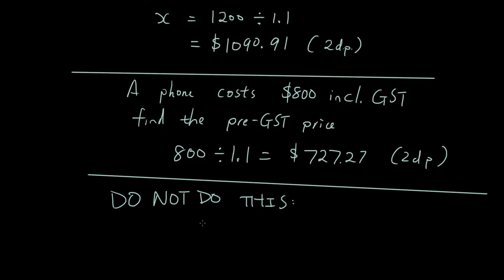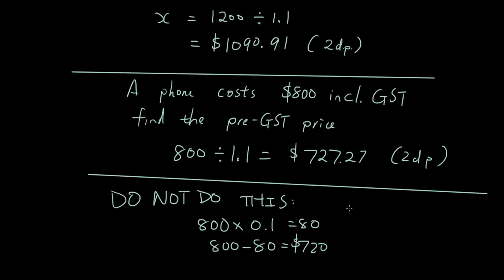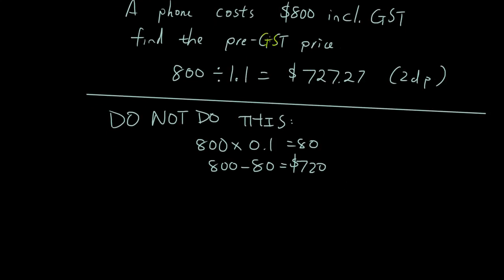Now what you don't want to do, do not do this. Okay, what you don't want to do is find 10% of 800 and then take it off because as you can see you get the wrong answer. Because when you want to find the pre-GST price you can't just take off 10% of the inclusive GST price. That's not how the maths works. So do not do this.